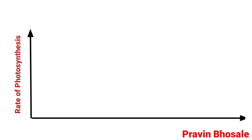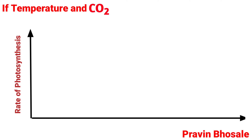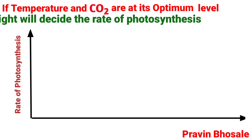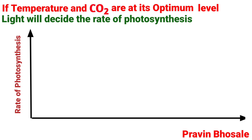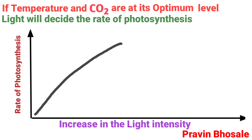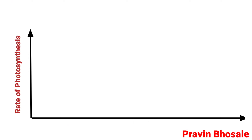Second, if temperature and carbon dioxide are at their optimum level, then light will decide the rate of photosynthesis. An increase in light intensity will result in an increase in the rate of photosynthesis.